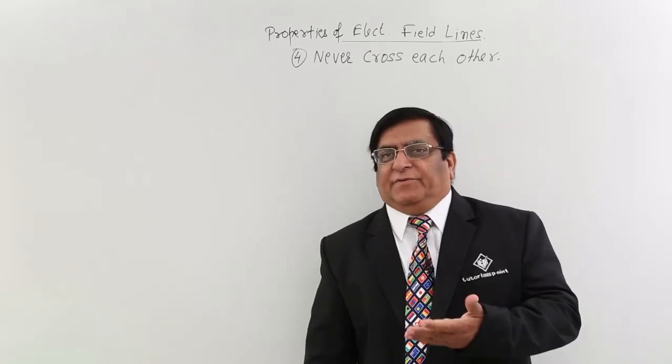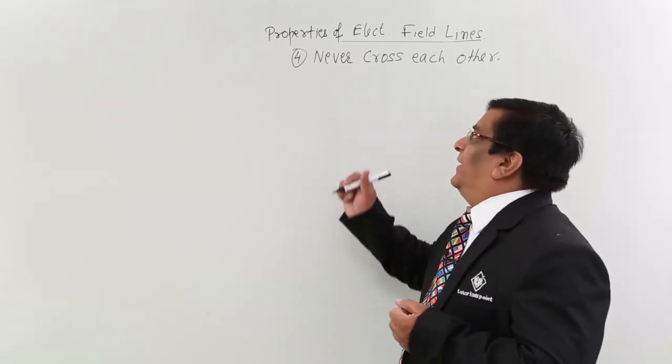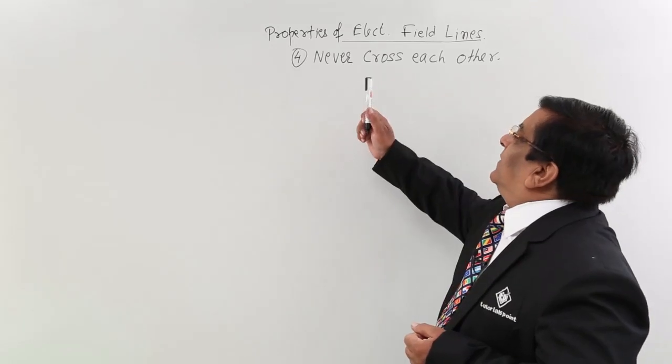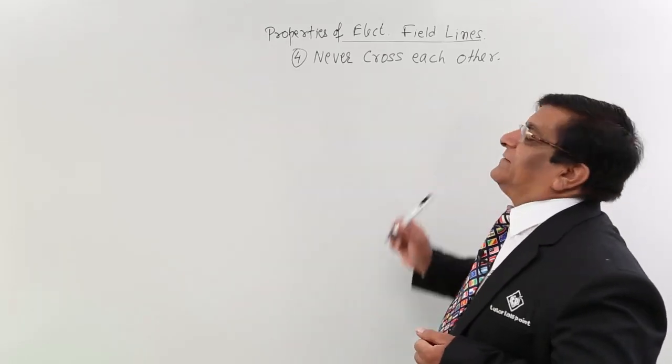After studying all the previous properties, now we come to another property that electric field lines never cross each other.